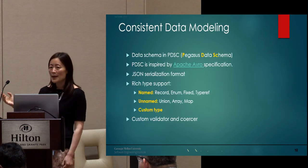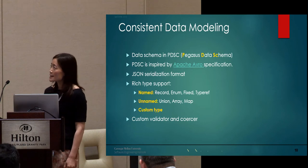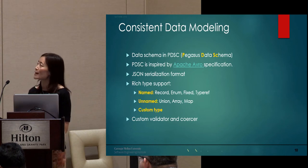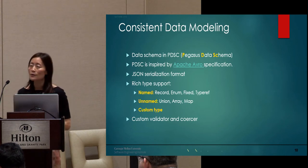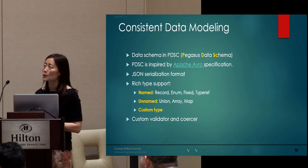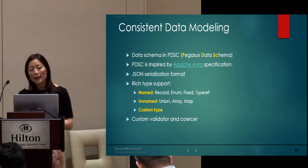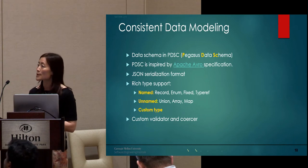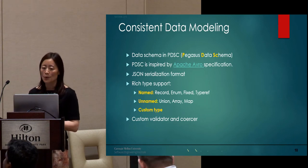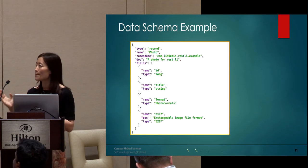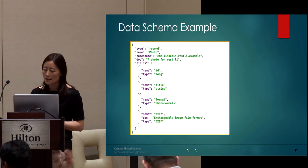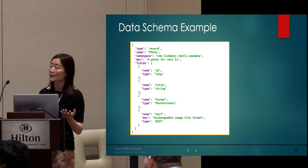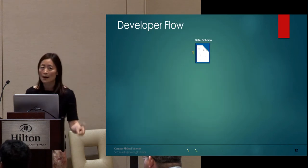Let's talk about the developer workflow when using Rest.li. First, you start by defining your data model — consistent data modeling is a key foundation for a data model-centric microservice architecture. In Rest.li, you define your data model using the Pegasus data schema language, called PDSC, inspired by Apache Avro with JSON serialization format. It provides rich type support like record, enum, union, array, and map, and also supports custom types. For example, here is a simple data schema file representing a data model called 'photo', which I'll use as an example for the photo endpoint.